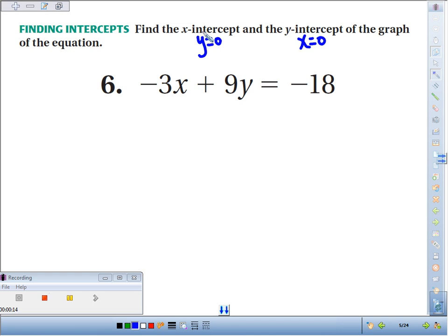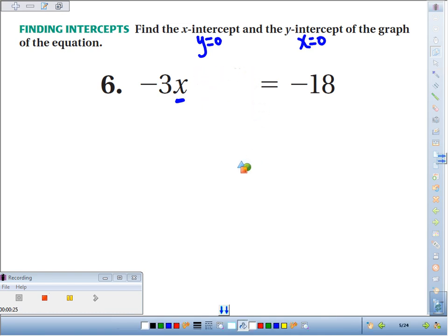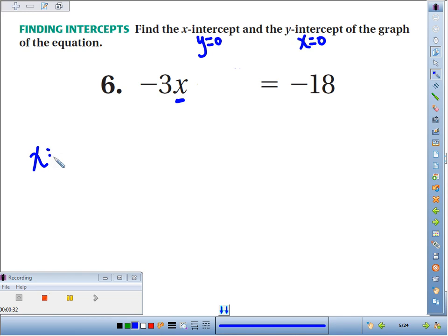Let's find our x-intercept first. So if I want to find x, I make y 0, and of course 9 times 0 would be 0, so this just disappears, and we get negative 3x equals negative 18. If you divide by negative 3 on both sides, negative 18 divided by negative 3 gives you an x-intercept of 6.